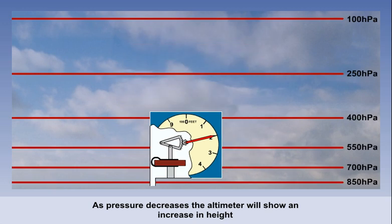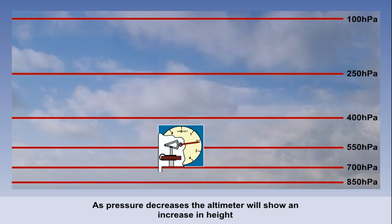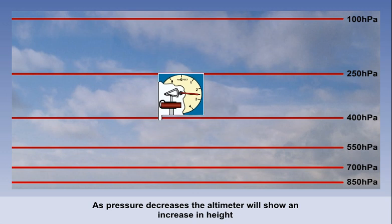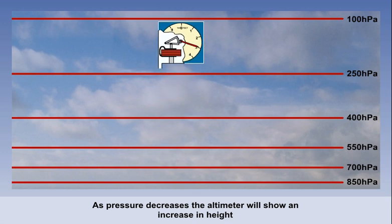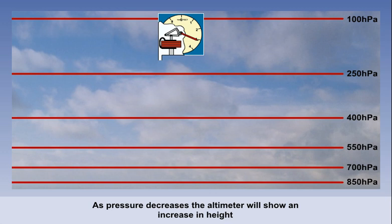We said pressure would decrease with height. Therefore, as our aircraft climbs through the atmosphere, the pressure will decrease and the altimeter pointer moves clockwise, showing an increase in height.